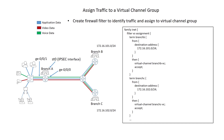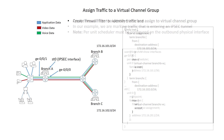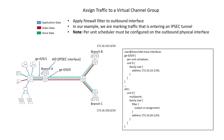If we examine the firewall filter that assigns traffic to a virtual channel, we can see that it is fairly straightforward. Traffic destined to 172.16.101.0/24 is sent to virtual channel branch B-VC. Traffic destined to 172.16.102.0/24 is sent to virtual channel branch C-VC. Other traffic is sent to the default virtual channel, which isn't shown on the screen. In our example, the physical interface requires per-unit schedule configured, even though the interface itself only has one unit, which allows the per-channel functionality to work.